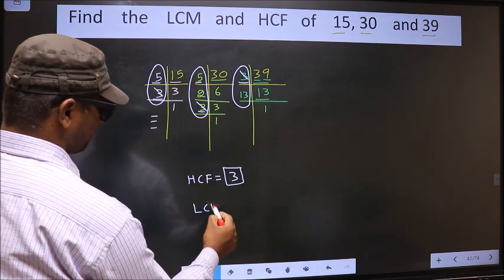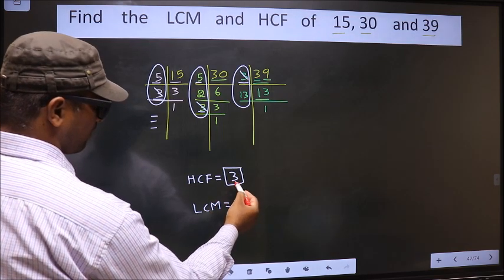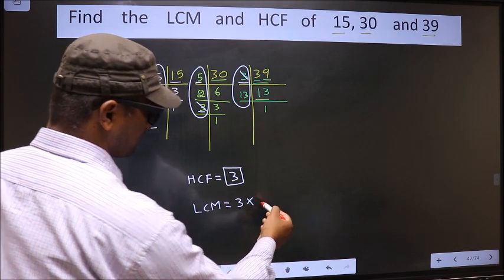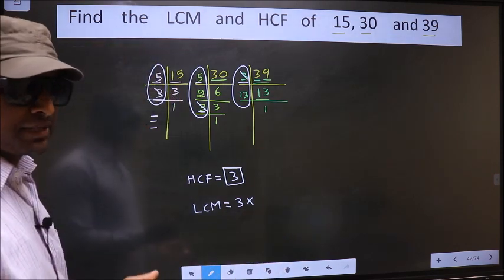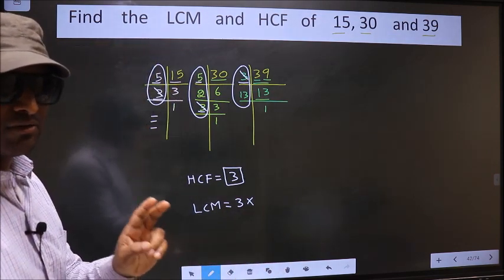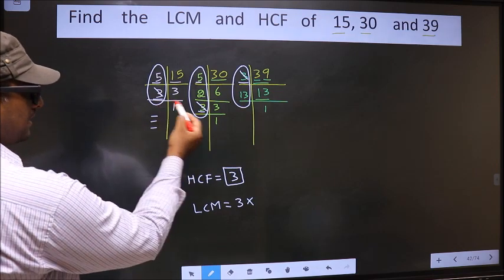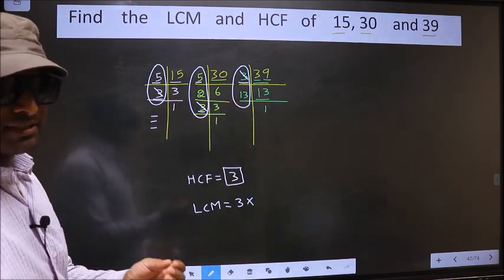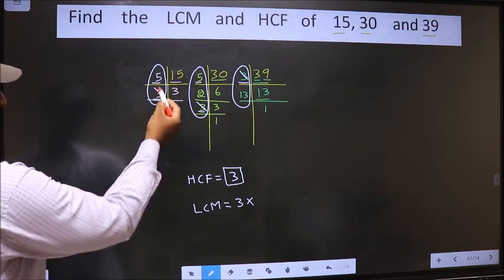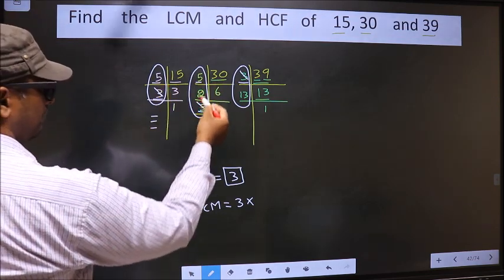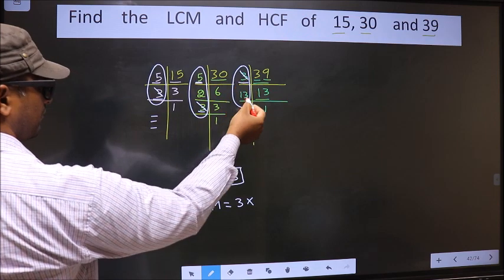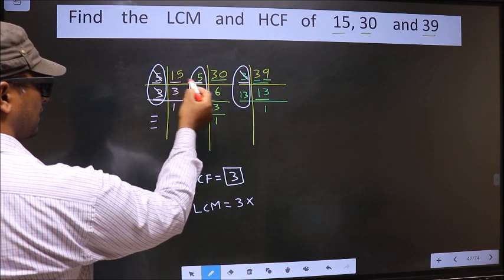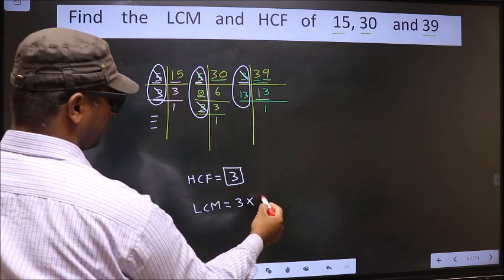Now to get LCM. Whatever HCF we got, to that we should multiply by the numbers which appeared either once or twice in these 3 places. What I mean is, see: Here we have 5. Do we have 5 here? Yes. We don't have 5 here. 5 appear twice. You cut this 5 and write here.